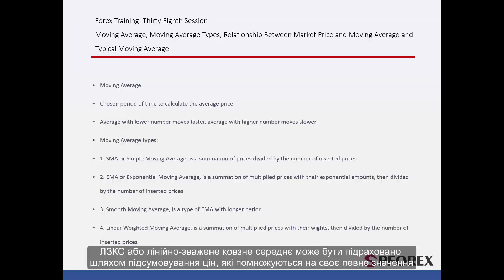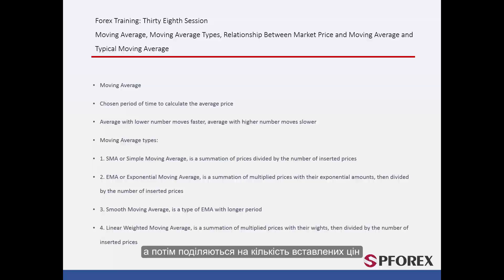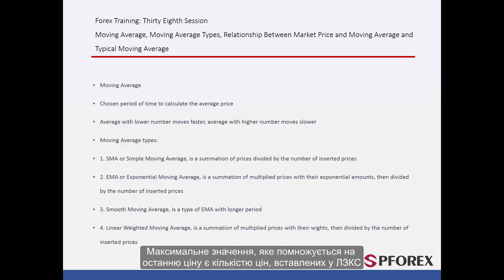LWMA, or Linear Weighted Moving Average, can be calculated through the summation of prices multiplied by a certain weight, then divided by the number of prices inserted. The maximum weight, multiplied by the most recent price, is equal to the number of prices inserted into the LWMA.